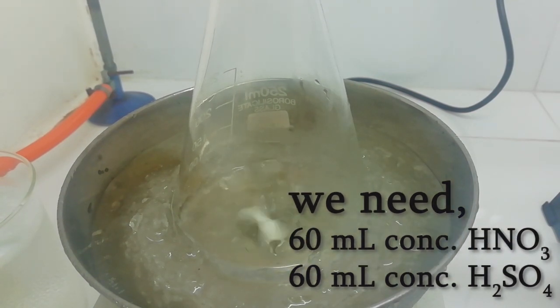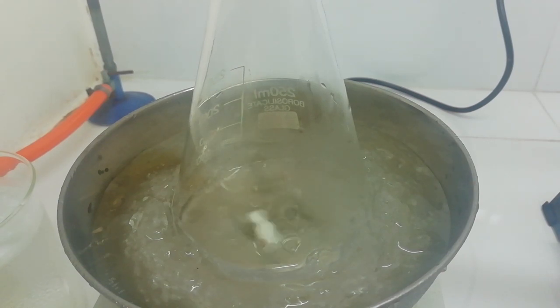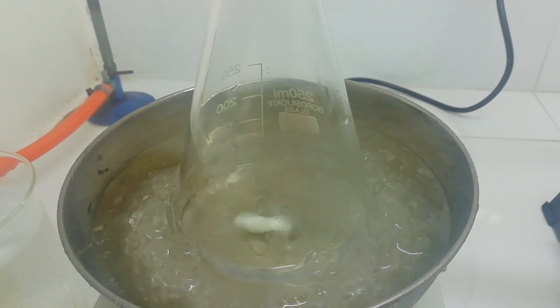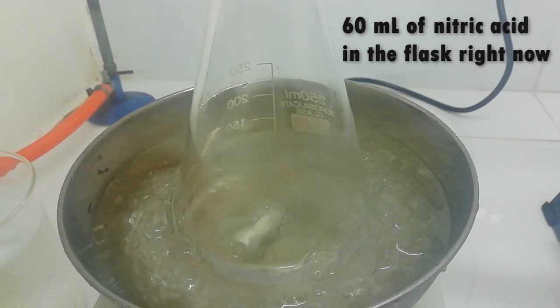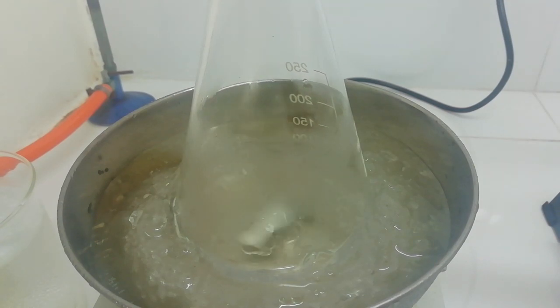Now you can see this is an ice bath. In this conical flask I have about 60 ml of concentrated nitric acid, and I have here about 60 ml of pre-chilled concentrated sulfuric acid.